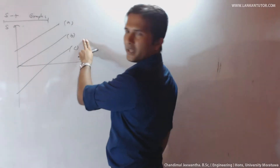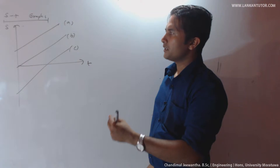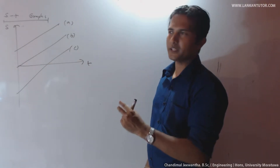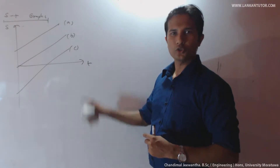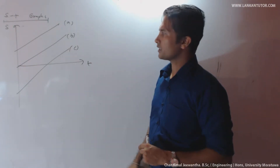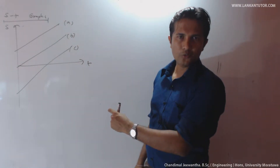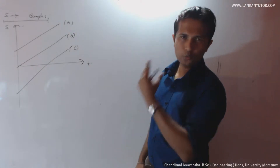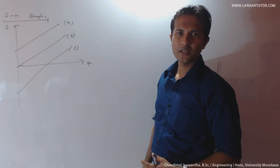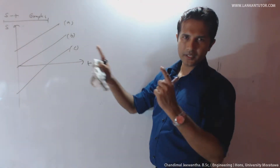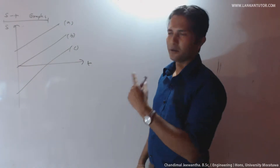Considering simple B: object moves from zero with uniform velocity towards the positive direction. Considering simple C: starts with negative displacement, moves towards the positive direction with uniform velocity. An important point is that at a particular time period, the object passes the origin.